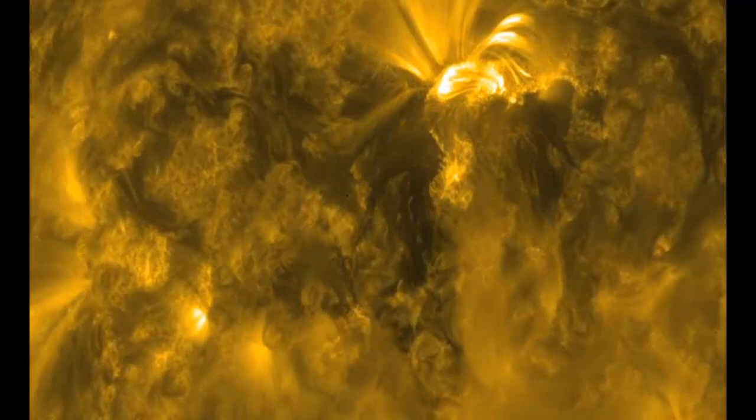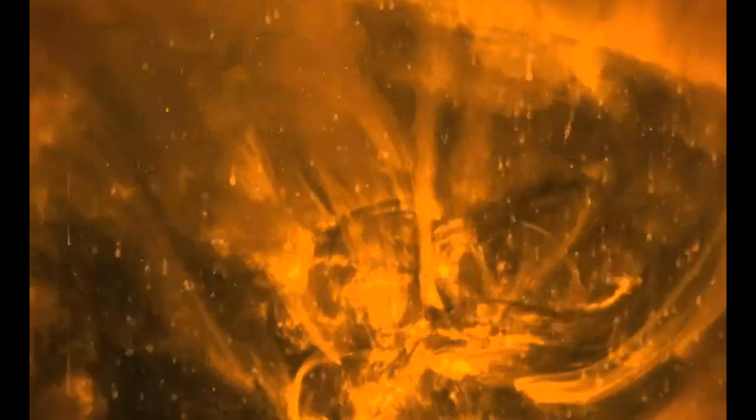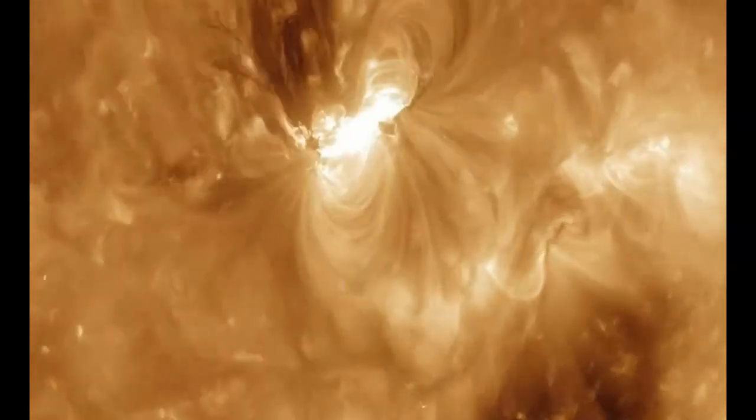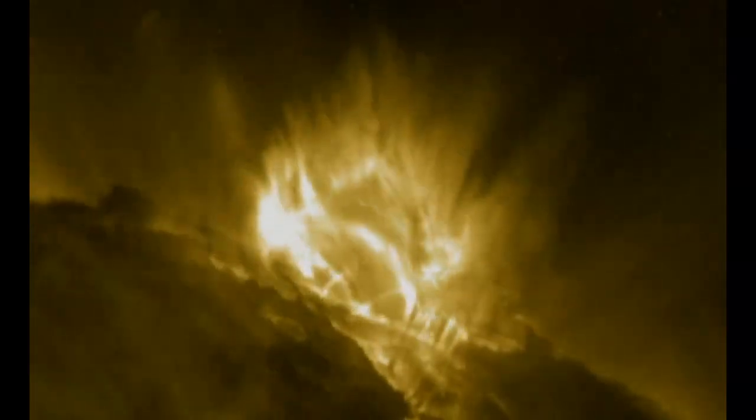So what are these solar eruptions? A solar flare is basically an explosion on the surface of the sun, ranging from minutes to hours in length. Large flares can release enough energy to power the entire United States for a million years.